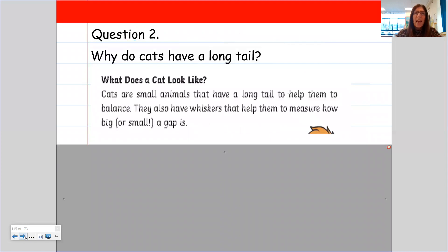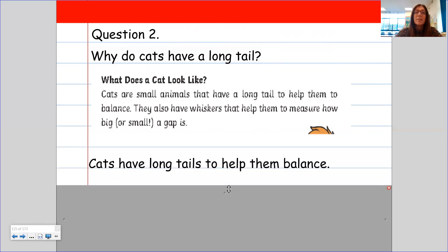So question two, why do cats have a long tail? So it says cats are small animals that have a long tail to help them to balance. So they have a long tail to help them to balance. And that's exactly what I have written. Cats have long tails to help them balance.